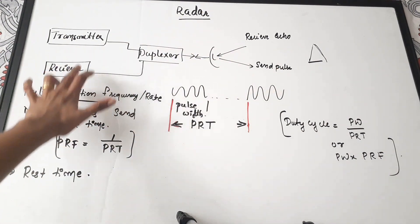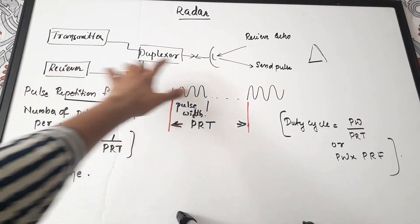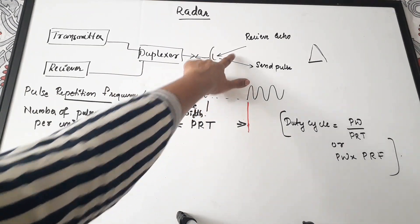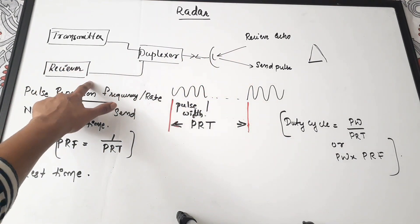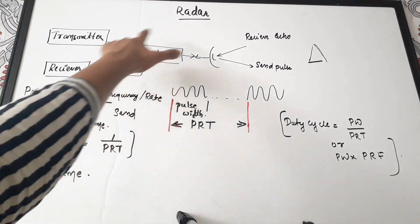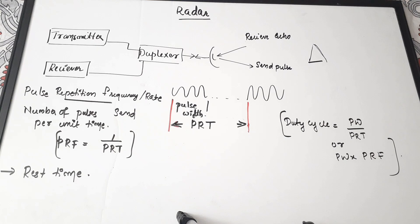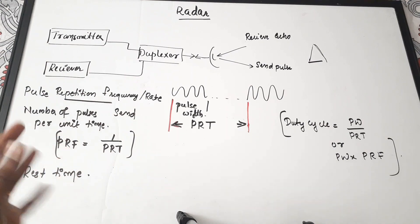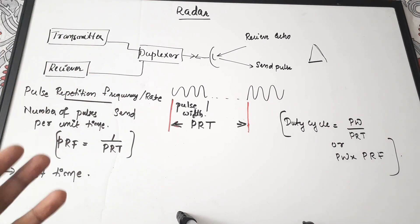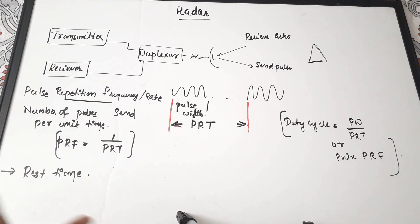This is the basic structure of a radar system. It has a transmitter and a receiver, since it is sending pulses and also receiving echoes. There is a duplexer which handles sending and receiving of signals, and there is an antenna. There will be a distant target which we actually want to detect.